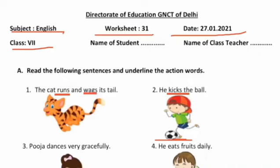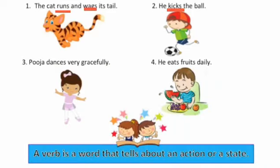The third sentence is: 'Pooja dances very gracefully.' Iska matlab hai ki Pooja bahut grace ke saath, bahut sundarta aur uttamta ke saath dance karti hai. Lekin kaam kya ho raha hai? Dance ka kaam ho raha hai. To action word kya ho gayi isme? 'Dances'. So we'll underline the word 'dances'.